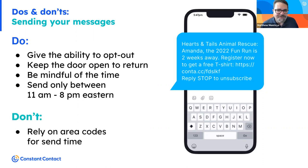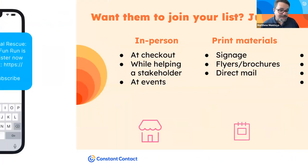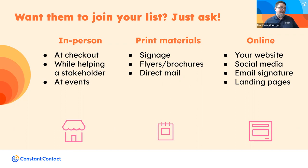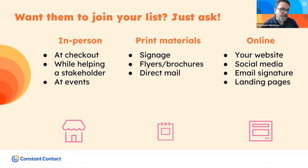How do you grow your text list? Getting permission for text marketing is very similar to getting permission for email marketing. In person — at frontline staff interactions, on the phone, certainly at events. Include the ability for people to submit their phone number and opt in on your event registration page. On print material, flyers, and signage, offer people the ability to join your text list along with your email marketing list. And online — on your website, blog, social media, email signature, and landing pages. If you have SMS with Constant Contact, your lead generation landing page becomes a place to get both email and text subscriptions.